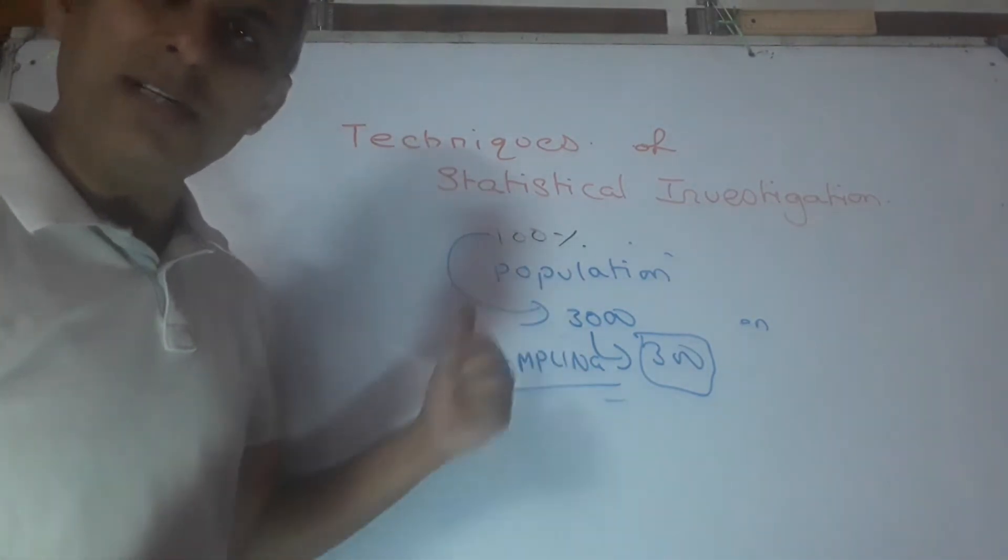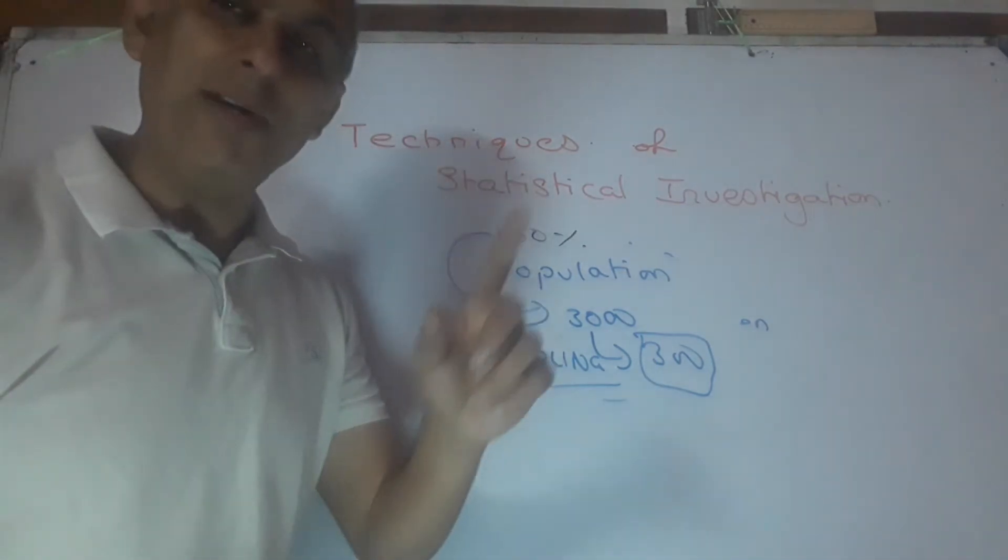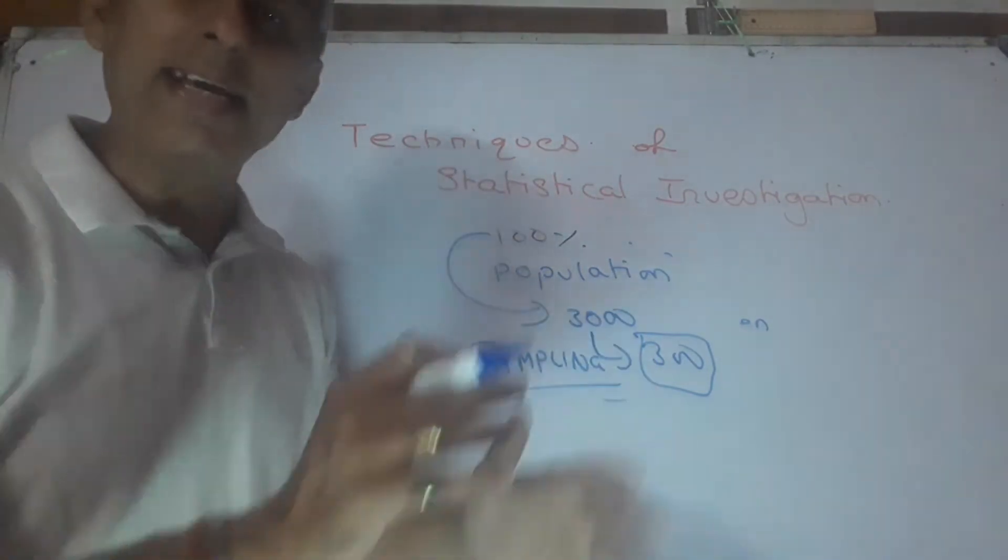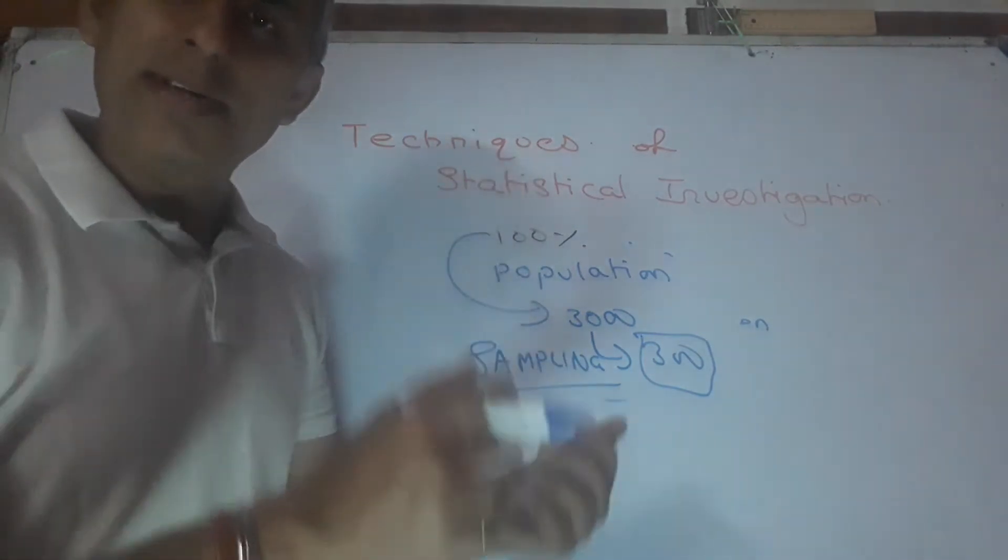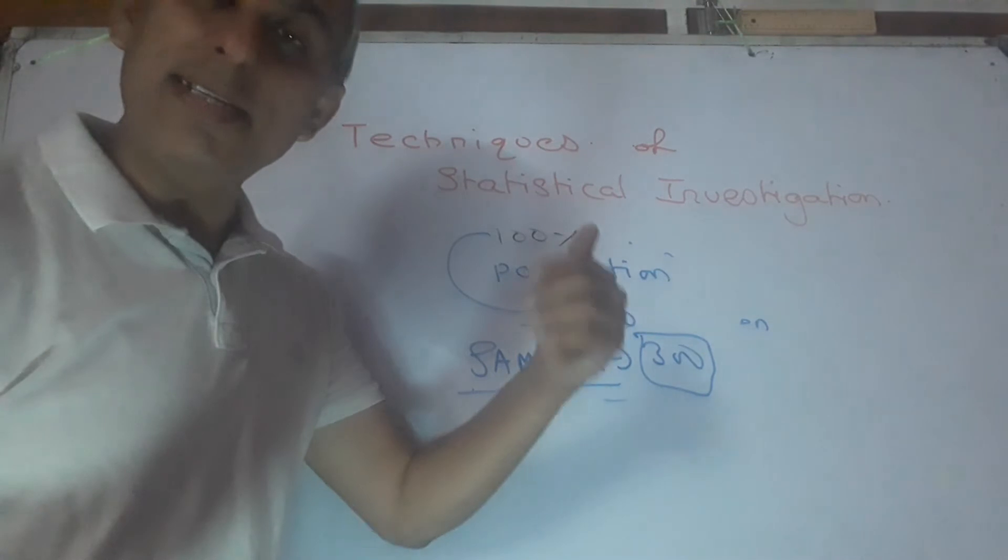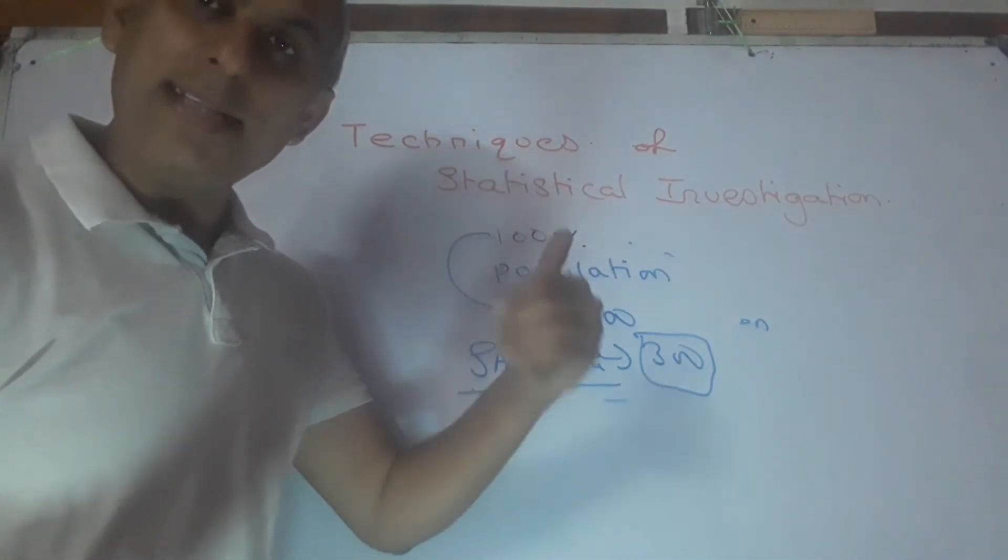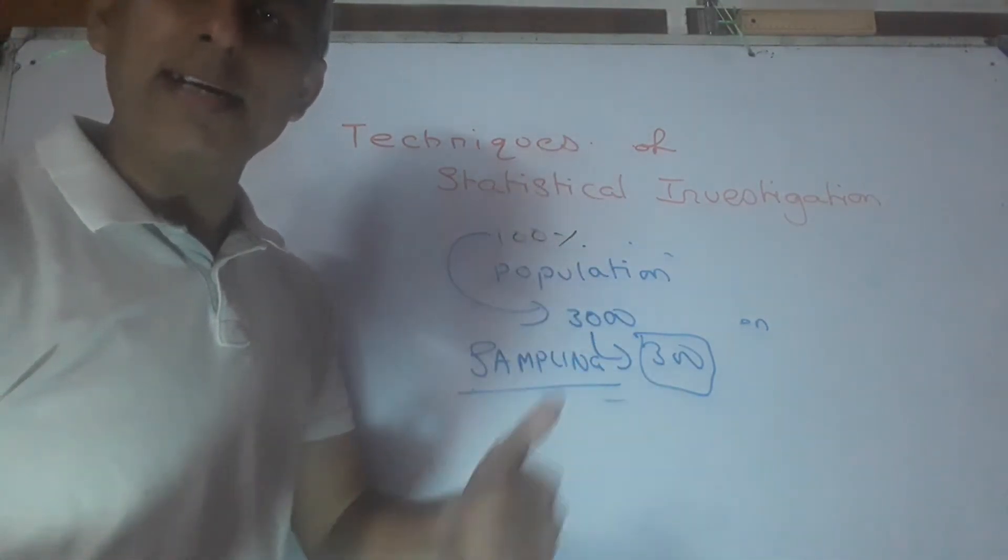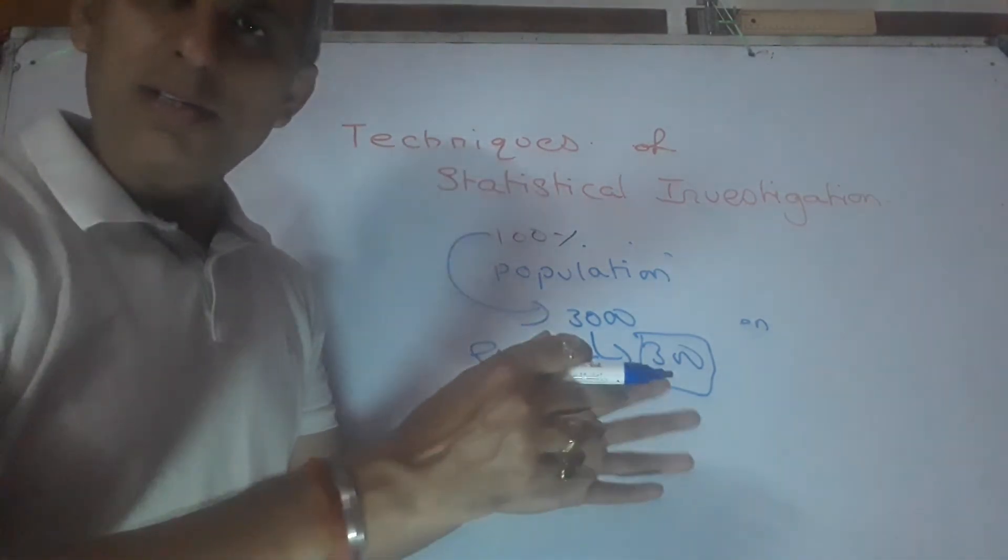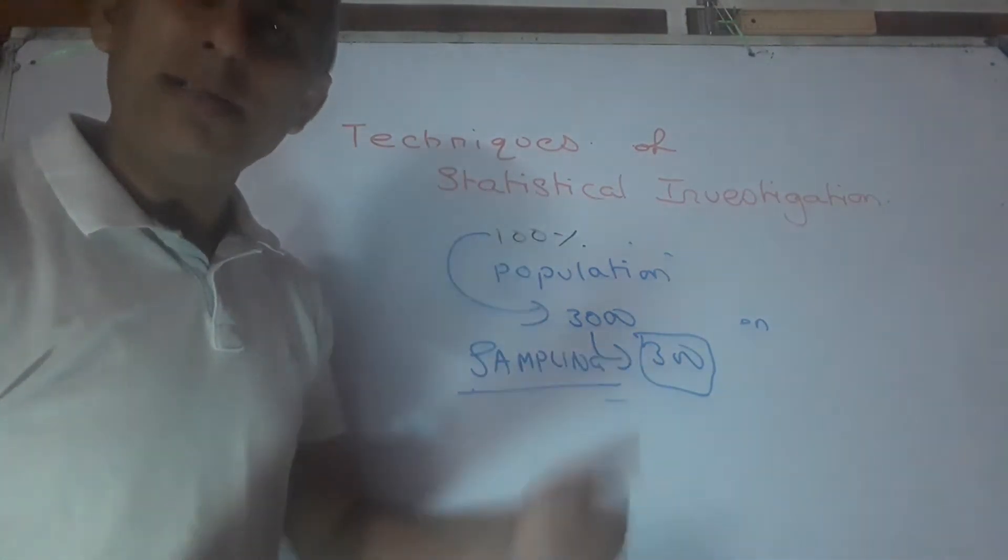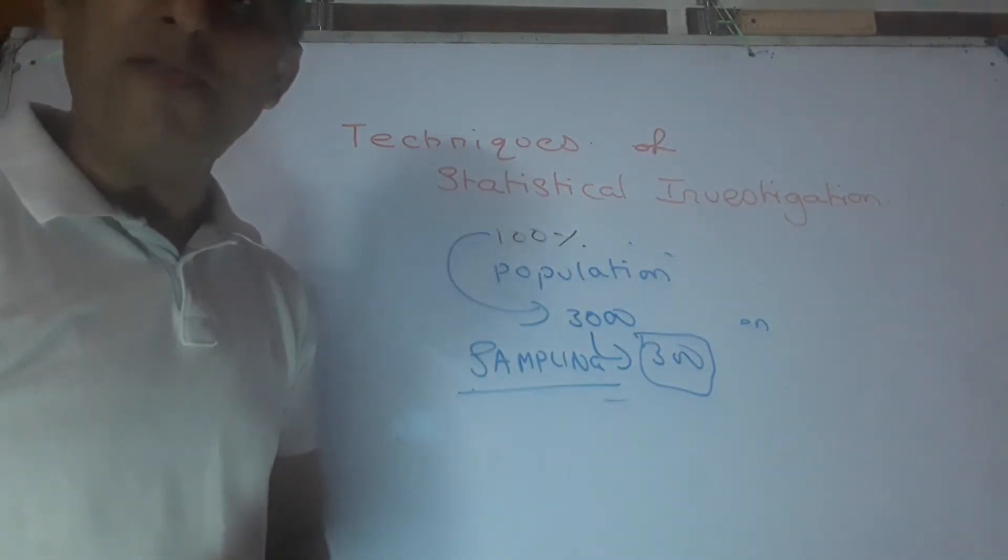Census is done by government of India. Remember, every 10 years they do it. The census of population started in the 19th century itself, in the year 1800 something. The first one and the 2011 one was the last one. 2021 will be followed.